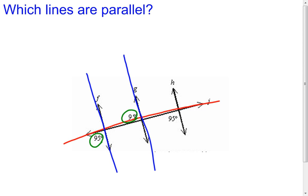Let me find the measure of this angle right here. I know that the 95-degree angle directly above it and this angle are going to be supplementary, so this angle must measure 85 degrees. Now I compare the 85-degree angle and the 95-degree angle — those are corresponding angles. For the lines to be parallel, corresponding angles must be congruent, but they're not congruent.